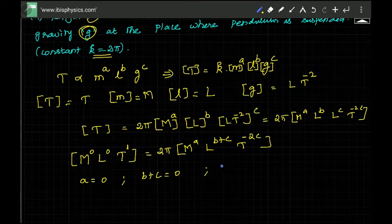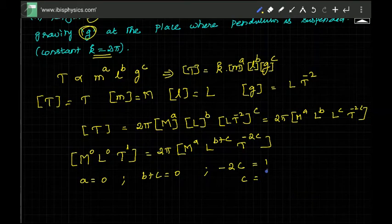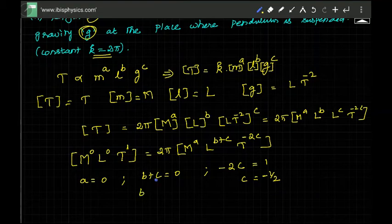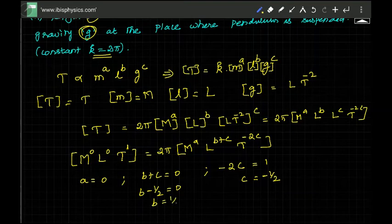On the right hand side minus 2c is the power of T. On the left hand side T power is 1. So c is going to be 1 by this, minus goes there, minus 1/2. Then b plus c is minus 1/2 equal to 0, then b equal to 1/2. These are 3 things.